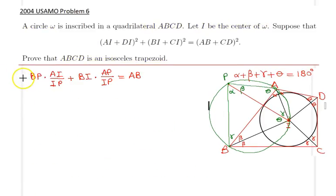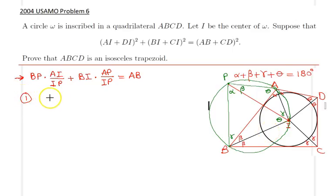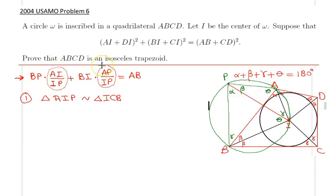On the next page I carry the previous result and divide both sides of the equality by IP. I will now identify similar triangles. The first similarity is triangle IAP is similar to triangle ICB. This tells us that AI/IP = IC/CB, and also AP/IP = IB/CB.